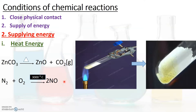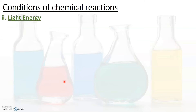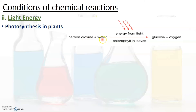Now let us see the next type: chemical reactions that take place by the supply of light energy. A very common example is photosynthesis in plants. During photosynthesis, carbon dioxide reacts with water in the presence of sunlight, with energy supplied as light energy, and in the presence of chlorophyll in leaves, to form the products glucose and oxygen.